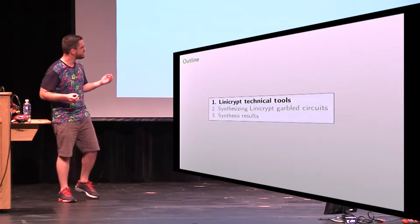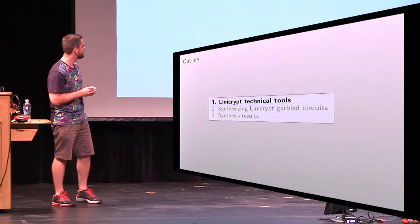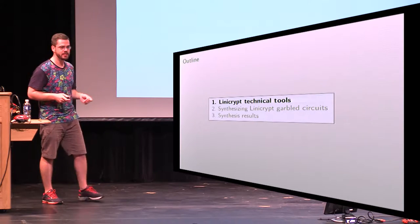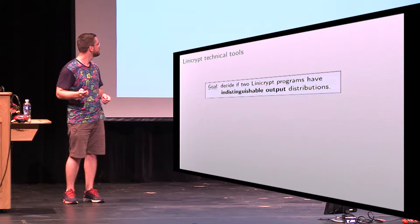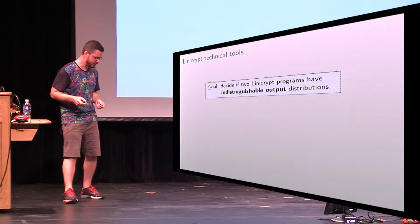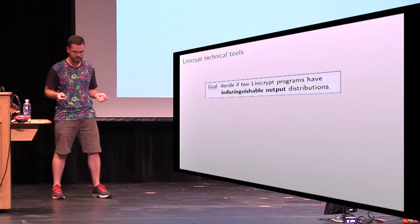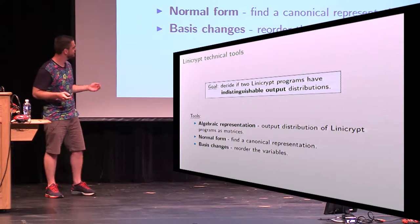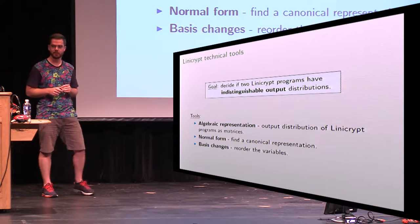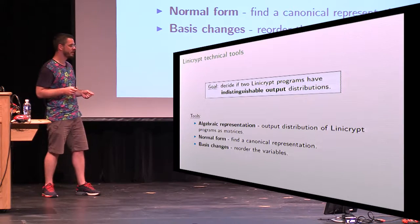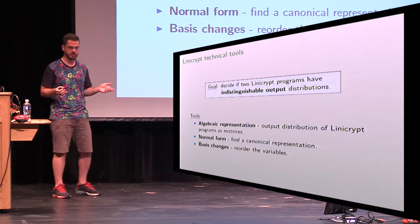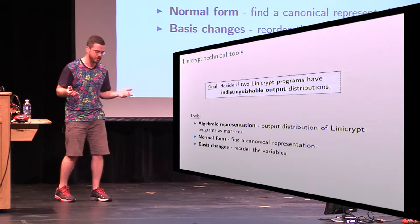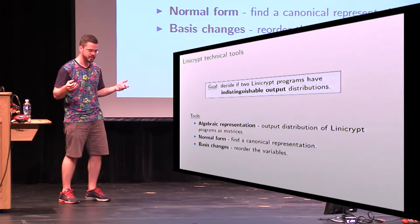I've got three main parts in my talk. Most of this talk will be about how LinnyCrypt works itself, and then I'll show you how we synthesize garbled circuits. To tell whether two LinnyCrypt programs have indistinguishable outputs, we'll need a few tools: we need to express a LinnyCrypt program as a matrix, trim that down to a canonical representation, and reason about how the variables can be reordered.